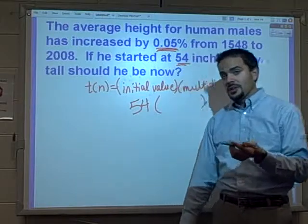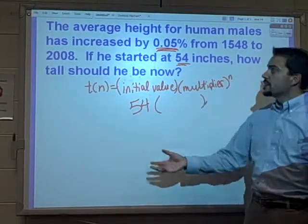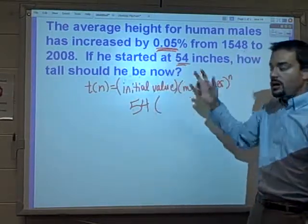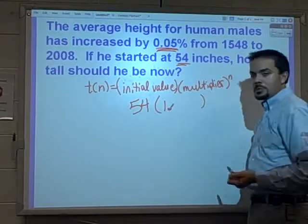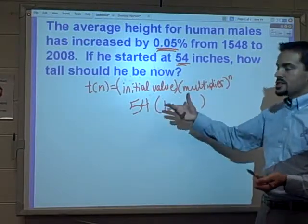Now to figure out the multiplier, again, you want to look at this and say, okay, well first of all it's increasing because they say it's increased by this amount. Increasing, it's got to be bigger than one. This one represents that 100%.